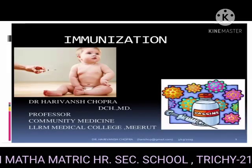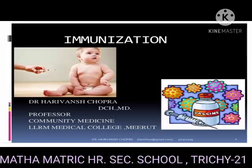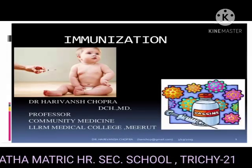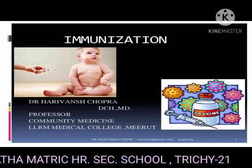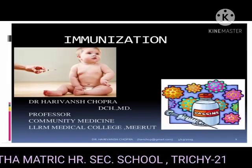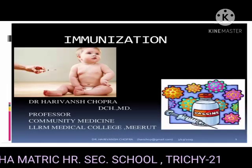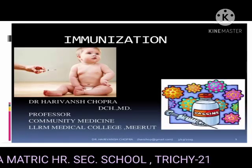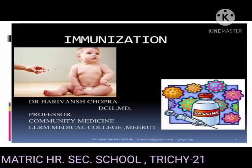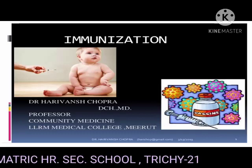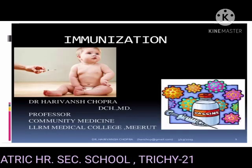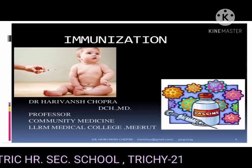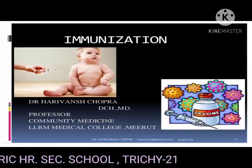Vaccines are of two types: live vaccines and killed vaccines. Live vaccines are prepared from living organisms where the pathogen is weakened before administration — example: BCG vaccine. Killed vaccines are microorganisms killed by heat or chemicals; they require a primary dose followed by a booster dose — example: typhoid vaccine.